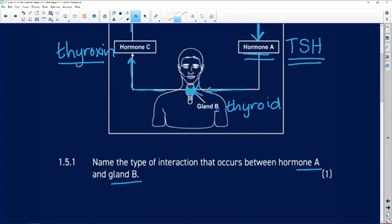So what interaction happens between thyroid stimulating hormone and the thyroid? The type of reaction is a stimulating reaction. It is causing the thyroid gland to produce a particular hormone.